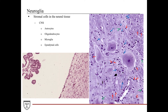Ependymal cells are these cuboidal-looking cells lining the ventricular spaces of the central nervous system, which is filled with cerebrospinal fluid, or CSF. Don't be fooled — ependymal cells may resemble an epithelial tissue, but this is not the case, since there's no basement membrane separating the ependymal cells from the neural tissues underneath. Another area you might see ependymal cells is lining the choroid plexus, which are these cauliflower-shaped complex projections found within the ventricular space. The loose connective tissue core of the choroid plexus contains many capillary networks which actually lack the blood-brain barrier, allowing the ependymal cells to filter the blood and generate cerebrospinal fluid.